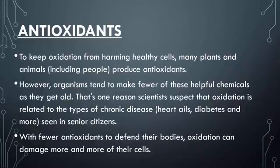Antioxidants are used to keep healthy cells in plants, animals, and people from being oxidized. However, as organisms make fewer antioxidants as they age, scientists suspect that oxidation is related to many chronic diseases like heart problems, diabetes, or brain problems found in older people. As you age and produce fewer antioxidants, there are less of them to defend our bodies, which means oxidation can damage more cells. That's why dark fruits and vegetables are very healthy — they're high in antioxidants, which prevent your body from corroding like a car.